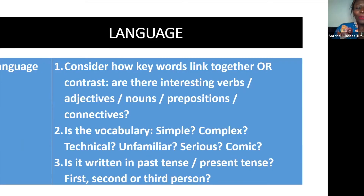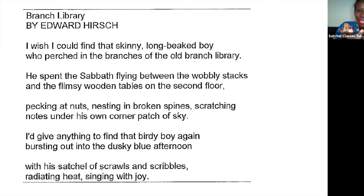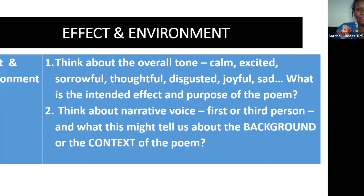The L in SMILE is language. Are there words that link together or contrast? Is the vocabulary simple? Is it written in past tense? In this poem, the words that link together all describe the boy as if he were a bird — the beak, the flying. But we also have contrasting words like 'dusky' and 'bursting': although the afternoon is dusky and the library is tattered, the boy is bursting with radiant heat. The delight of learning has really captivated him.